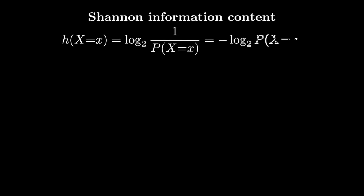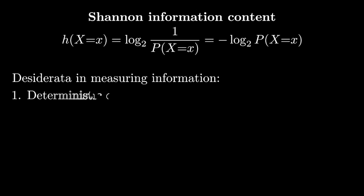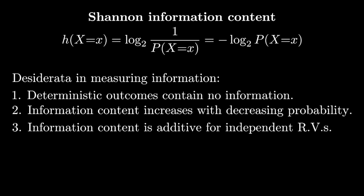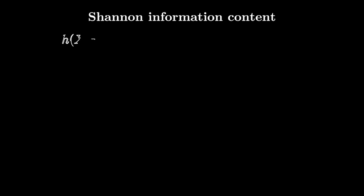So what makes this a reasonable measure of information content? There are a couple different desiderata that you might think about when defining such a quantity. Our first criterion is that deterministic outcomes don't convey any information. You knew it was going to happen, so you didn't learn anything. Our second criterion is this idea of surprise—that the amount of information you get increases as the probability of the event gets smaller. And then the last idea is that information content needs to add. In particular, when I have two independent random variables, their information content together needs to be the sum of their information content when considered separately.